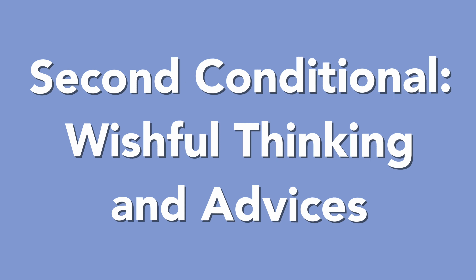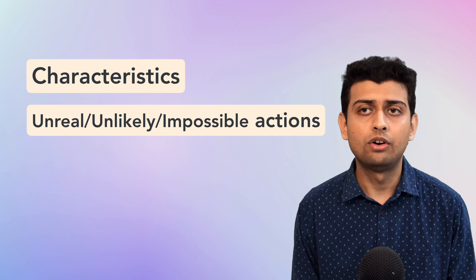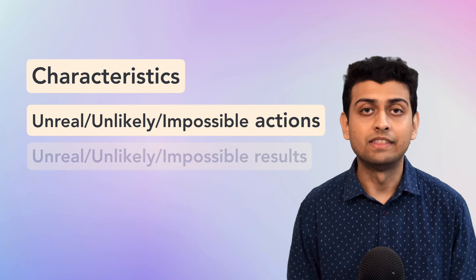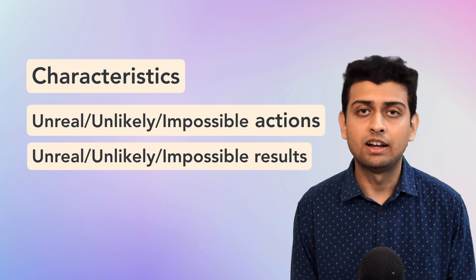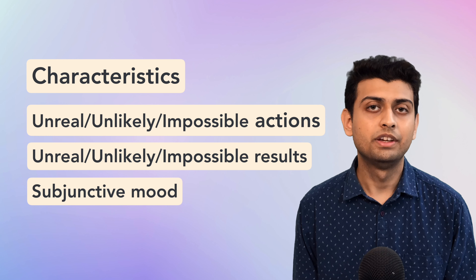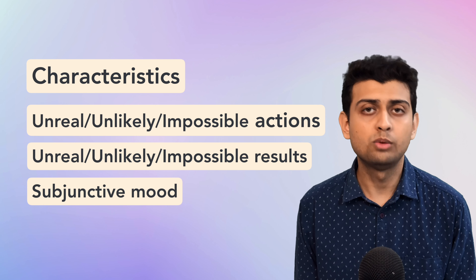The second conditional uses 'if' to describe an unlikely or impossible event or action, and for that reason the second conditional is called the unreal conditional. The described result is also very unlikely. The second conditional is highly unlikely, imaginary, unreal, or sometimes just straight away impossible. It is in the second conditional that we use the subjunctive mood, characterized by the usage of 'were' after I, he, she, and names of people.